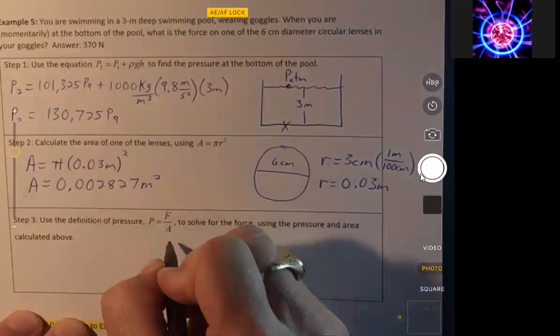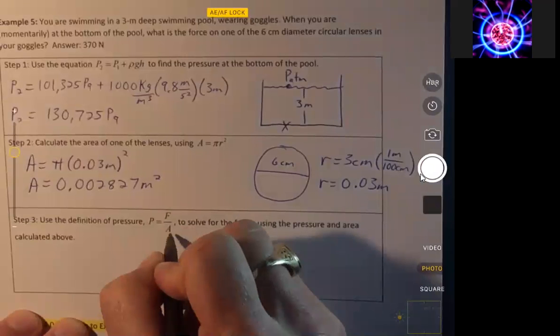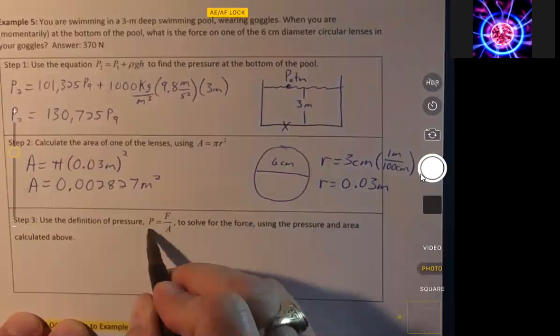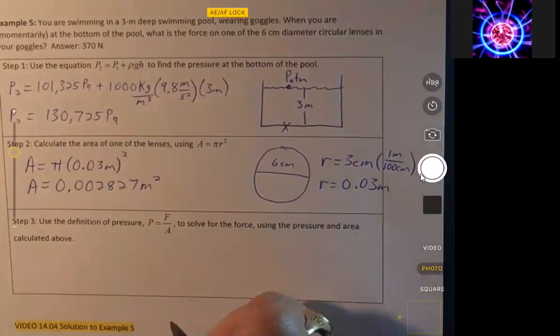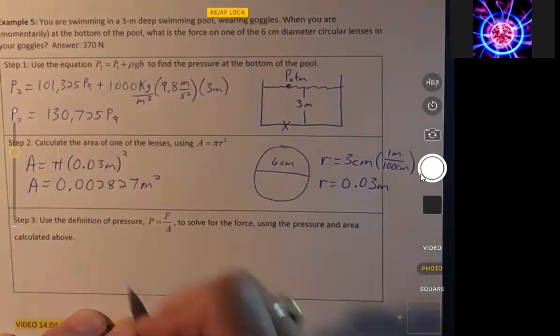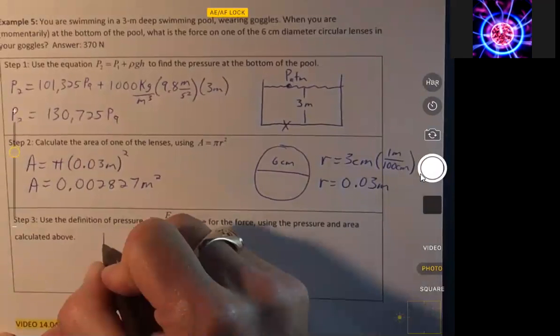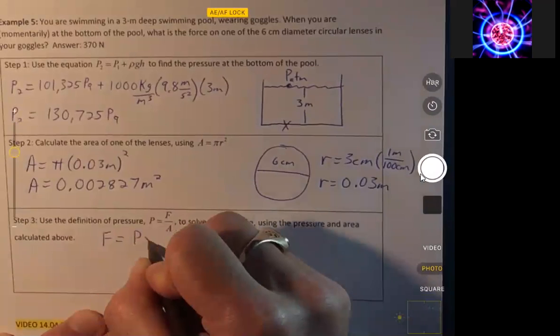So the pressure is equal to force times area, we multiply—I'm sorry, pressure is equal to force divided by area. Here we're going to multiply both sides by A, we get force equals P times A,